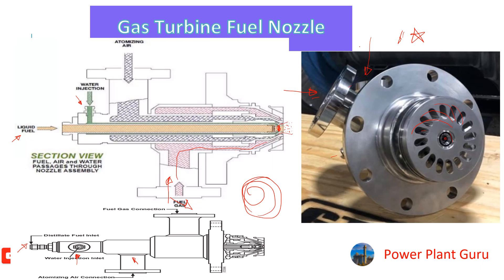This swirling action from the gas ensures uniformity of the combustion and proper mixing of air and natural gas. That is how the air flow, gas flow, and liquid flow are designed to pass through the fuel nozzle.